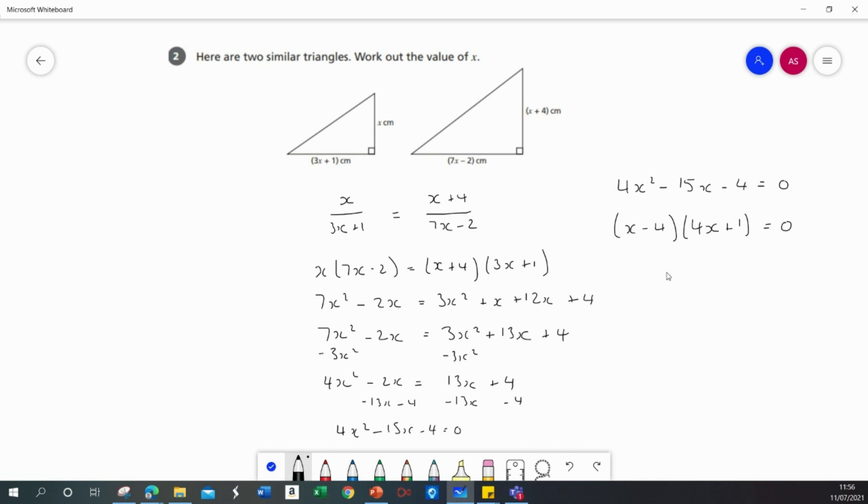Solving both of those brackets I've got two solutions. I've got a solution of x equals 4. We've got a solution of x equals minus 1 over 4.